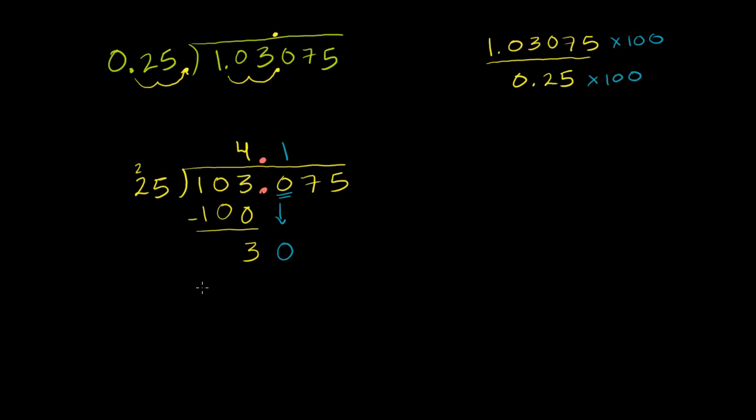So we could always have that decimal sitting right there in our quotient or in our answer or our quotient. So anyway, we were at 25 goes into 30 one time. 1 times 25 is 25. And then we can subtract. 30 minus 25, well, that's just 5.